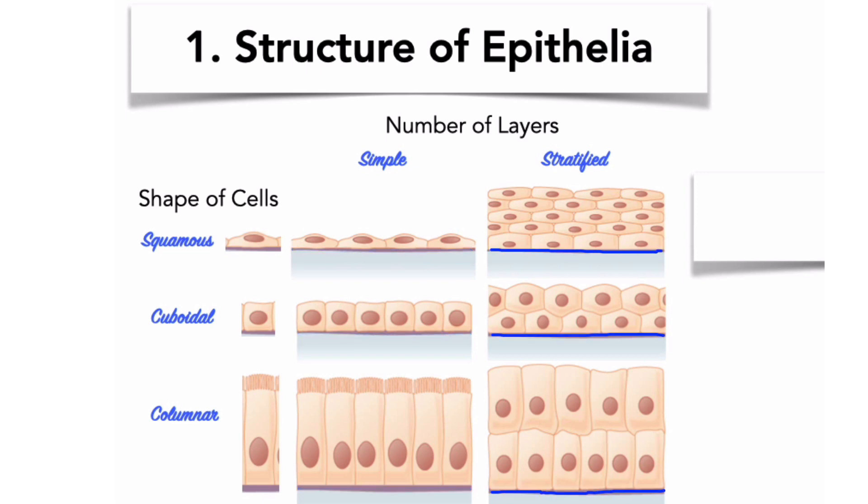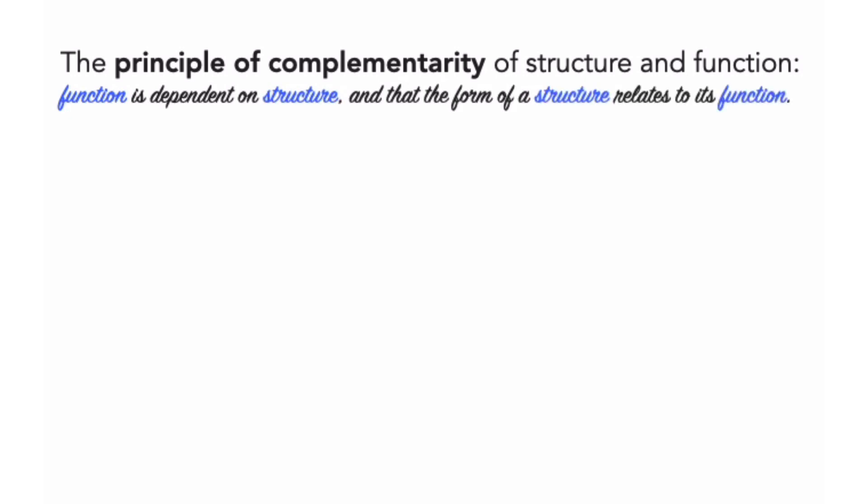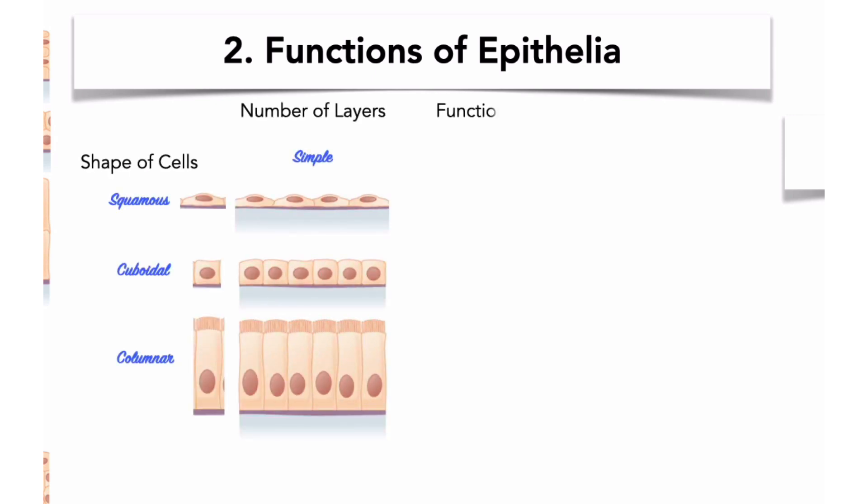Only the deepest cells of a stratified epithelium connect to the basement membrane. A stratified epithelium provides greater protection, due to its thickness. Stratified epithelia are usually found in areas that are commonly exposed to mechanical or chemical stresses. Examples include the surfaces of the skin, and the lining of the mouth, and pharynx. One of the key principles in the field of anatomy and physiology is the principle of complementarity. The principle of complementarity states, function is dependent on structure, and that the form of a structure relates to its function. Let's list key functions of each class of epithelia, and reflect on how their functions are related to their structures. We will also cite examples of where these tissues can be found in the body.